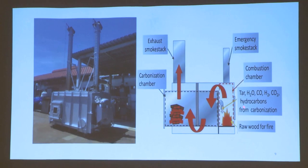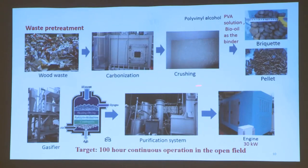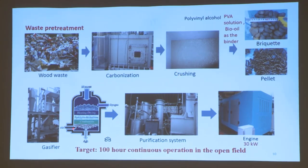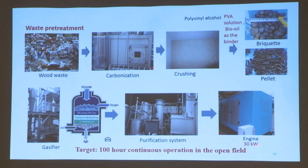The total wood consumption in the combustion chamber is around 25 kilograms per batch. After carbonization, we use a binding solution and bio-oil as the binder for densification. The densified fuel is then gasified in a fixed-bed gasifier, goes through the purification system, and the clean syngas enters the engine for power generation. The output power is around 30 kilowatts.